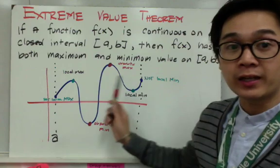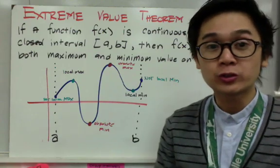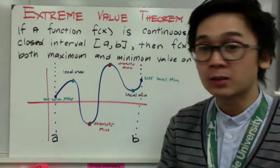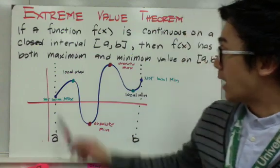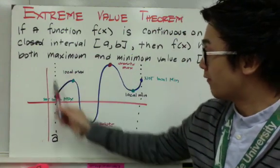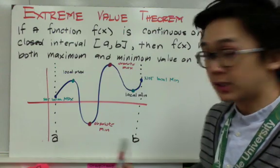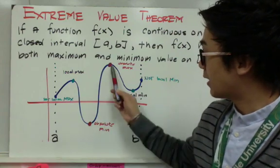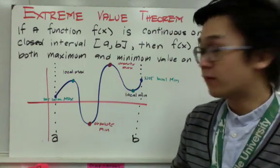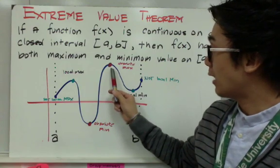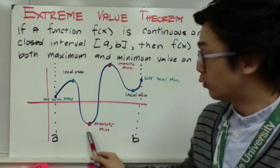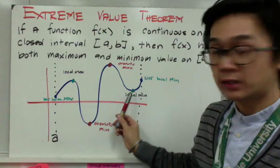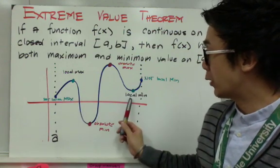This is the graphical display of the extreme value theorem. It shows where the absolute maximum and absolute minimum are, and where the local max and local minimum of a given function are. In this function on closed interval a and b, we have our absolute maximum and absolute minimum. This peak right here is the absolute max, and this lowest peak is the absolute minimum. These two curvatures are the local max and local minimum.